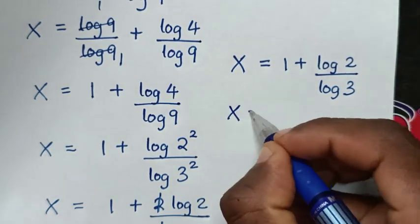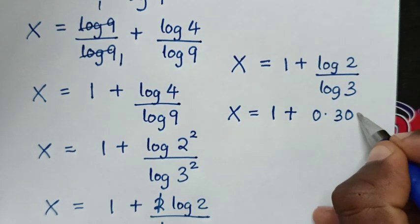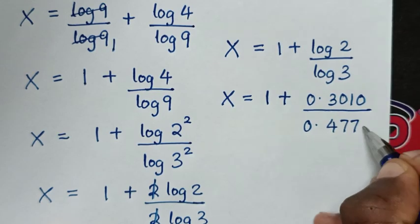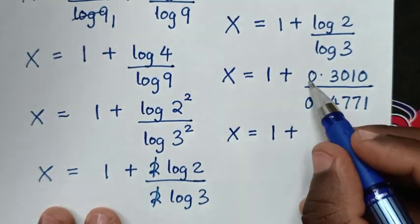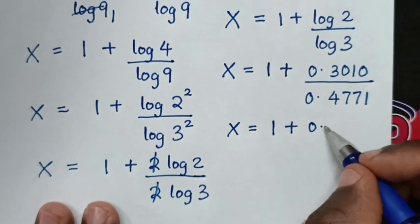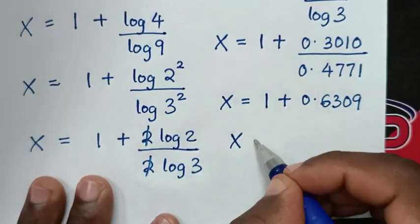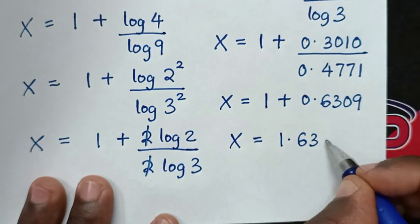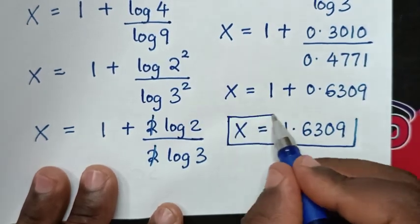Then in the next step, it will be x is equal to 1 plus log of 2, which is 0.301, over log of 3, which is 0.4771. So it will be x is equal to 1 plus 0.301 over 0.4771, which is 0.6309. Then it will be x is equal to 1 plus 0.6309, which is 1.6309. Therefore, this is the final answer for the value of x in this problem.